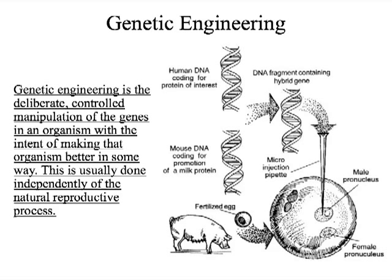What is genetic engineering? Genetic engineering is the deliberate, controlled manipulation of genes in an organism with the intent of making that organism better in some way. Deliberate means on purpose, and controlled manipulation means that scientists are changing the genes on purpose. The reason they're changing genes on purpose is to make an organism better or to make it beneficial to us.